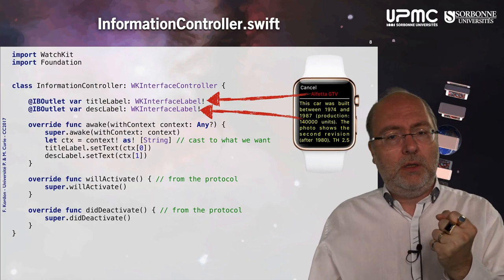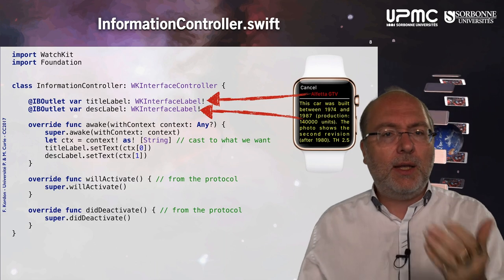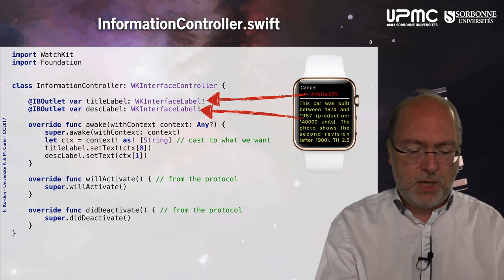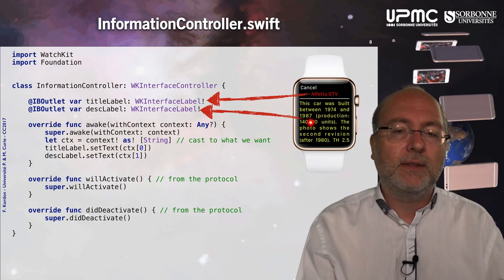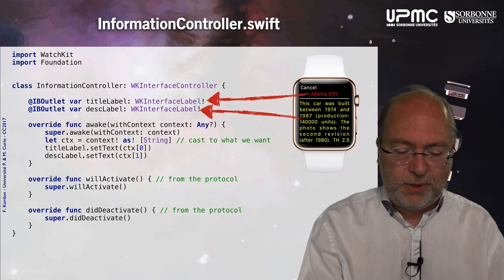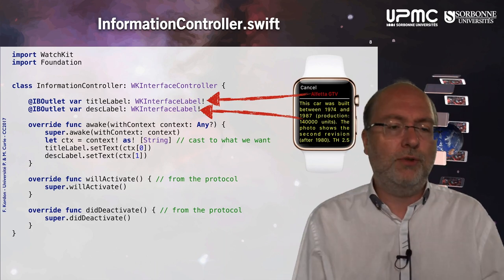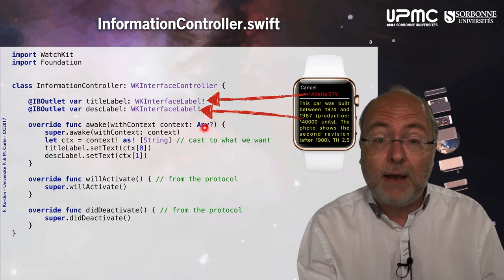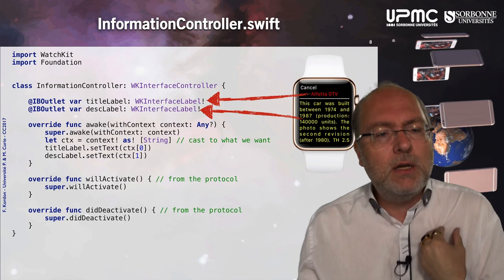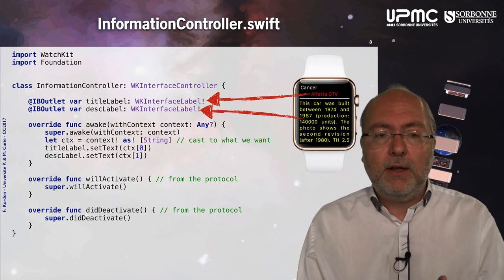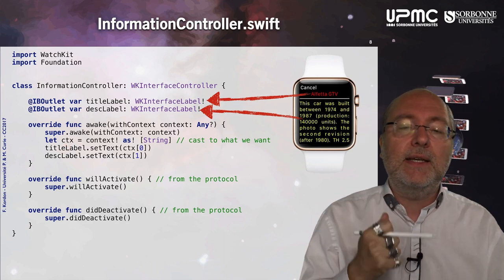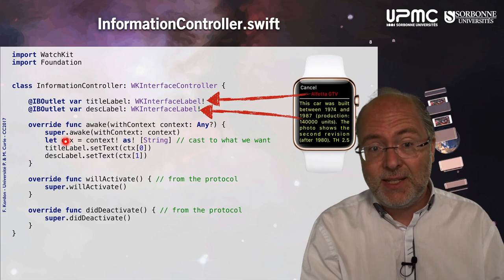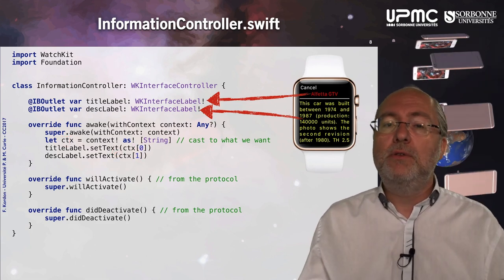When I push the new screen with information, I pass the context, and the associated information controller comes with it. Similarly, I control-drag-and-dropped the two labels. In the information controller, the awakeWithContext method receives a context that can be anything, but I know it's an array of strings. So I cast this context — a reference to anything — to a reference to an array of strings, and then use ctx[0] and ctx[1] to set the values for the labels. It's that simple.